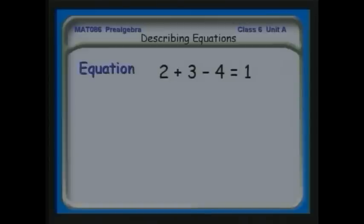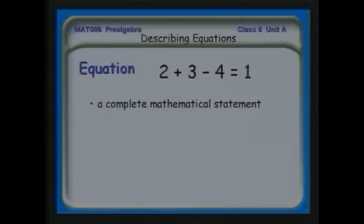An equation is a complete mathematical statement — an assertion that something is true. An equation can be true or not true. For example, the assertion 2 plus 3 times 5 minus 4 equals 1 is a true statement because the left side reduces to what's on the right. If I had equals 5 on the right, the assertion would be false. You can think of equations as assertions you can say yes, that's true, or no, that's false.